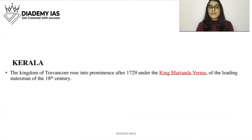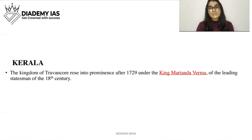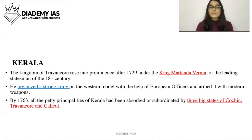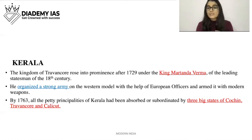Next is Kerala. The Kingdom of Travancore rose to prominence after 1729 under King Marthanda Verma, one of the leading statesmen of the 18th century. He organized a strong army on the Western model with the help of European officers and armed it with modern weapons. By 1763, all the petty principalities of Kerala had been absorbed and subordinated by three big states: Cochin, Travancore, and Calicut.